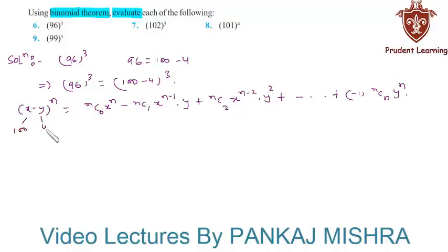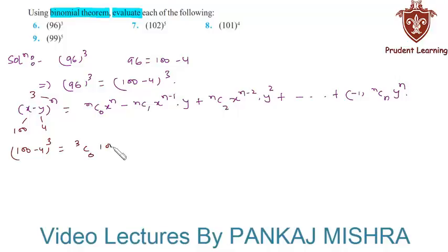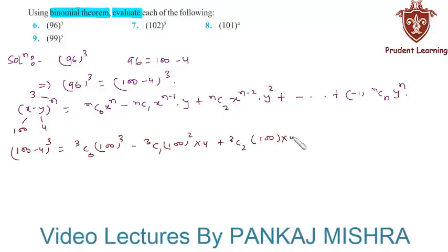Now we will substitute x equals 100, y equals 4, and n equals 3 to get the expansion of (100 minus 4) whole cube. So here we have (100 minus 4)³ equals 3C0·100³ minus 3C1·100²·4 plus 3C2·100·4² minus 3C3·4³.